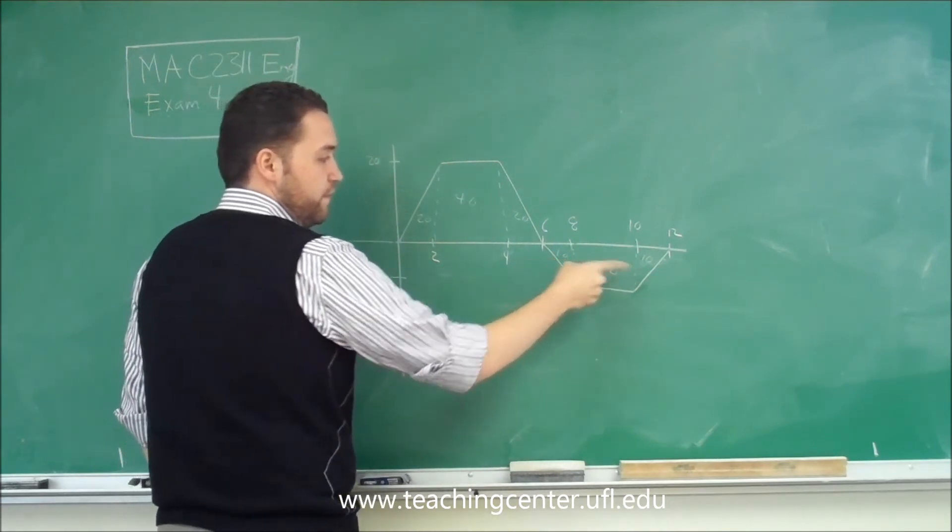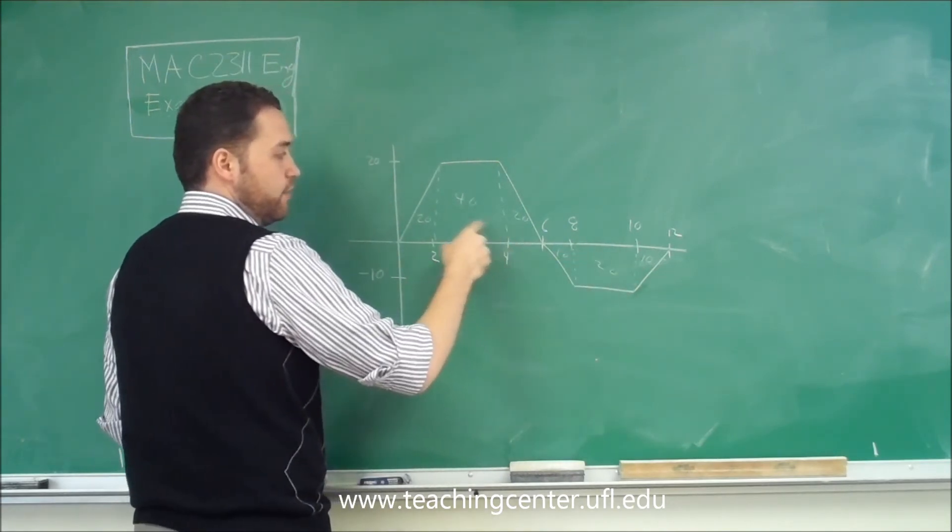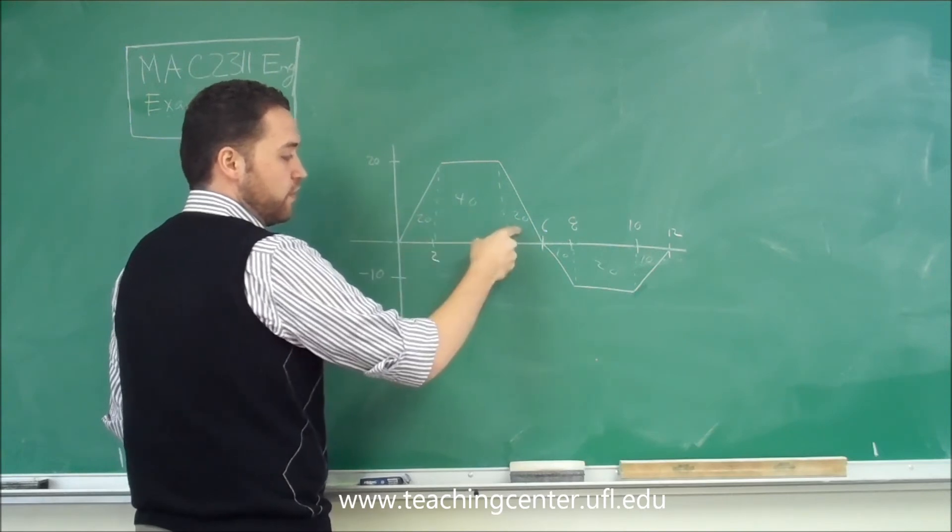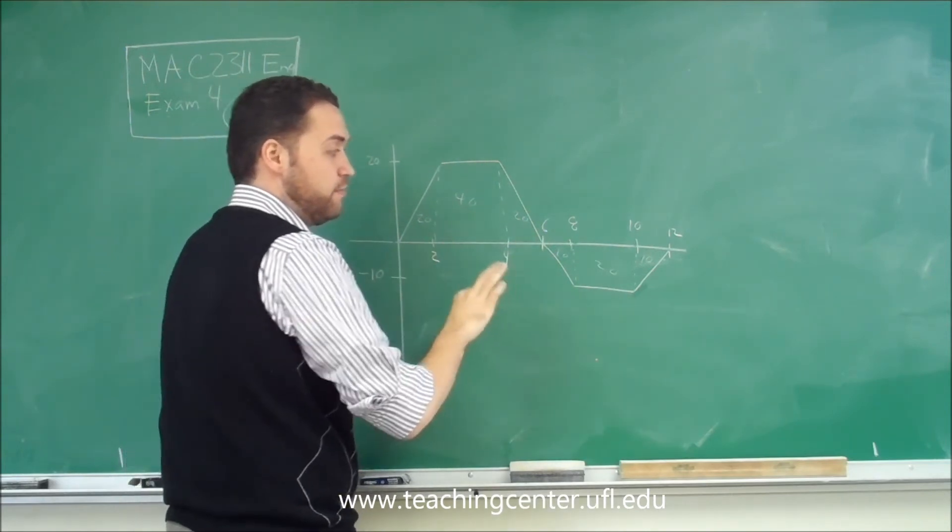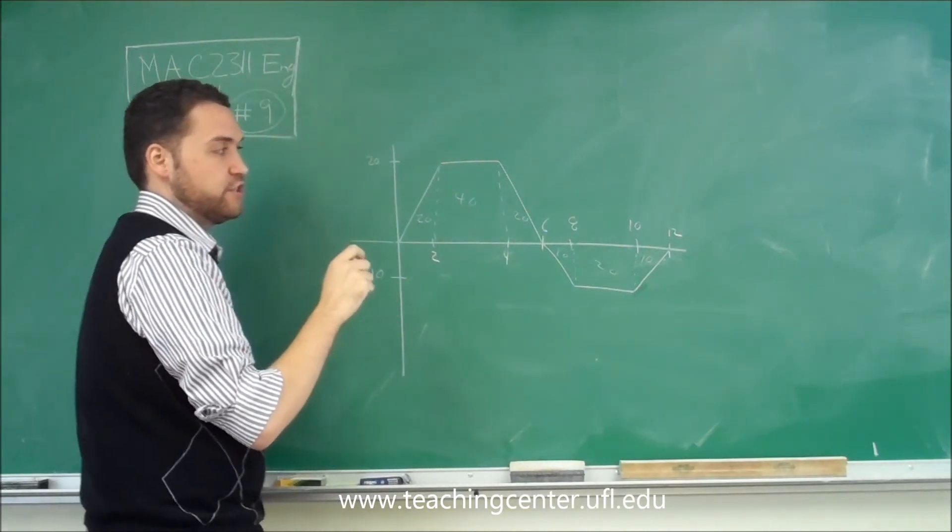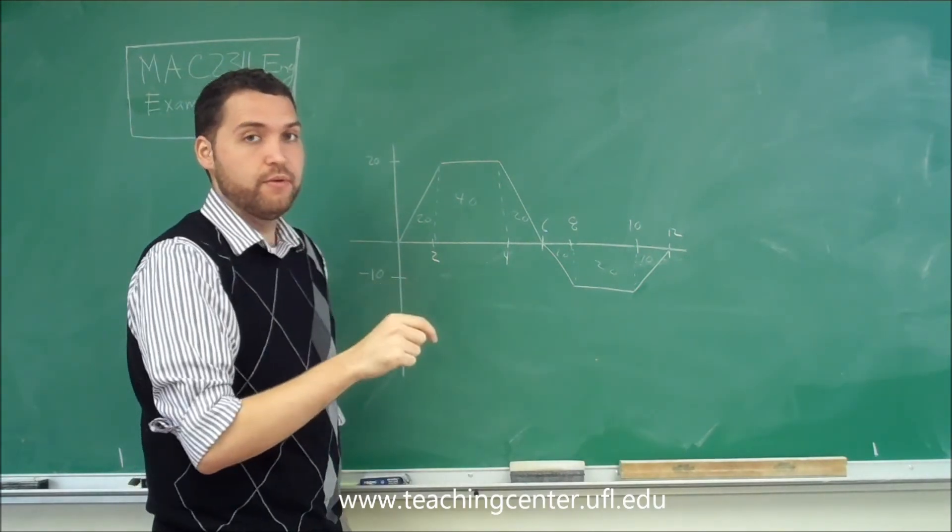So you can see that you have 40 here total, so it's going to knock out with this 40 here, and you'll just have 40 left over. So that would be what your answer would be if they asked you for the displacement, but we want the total distance.